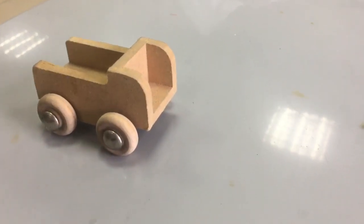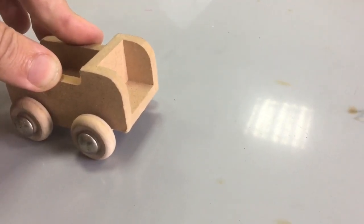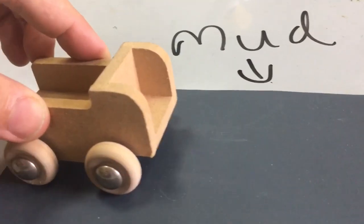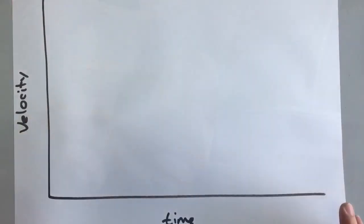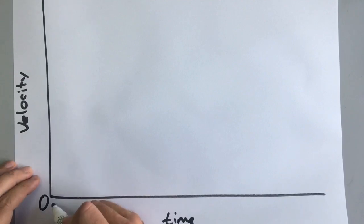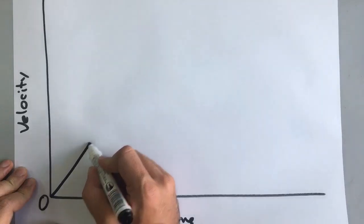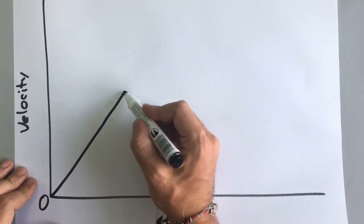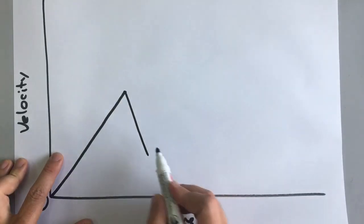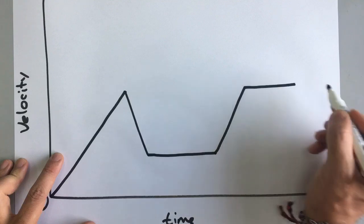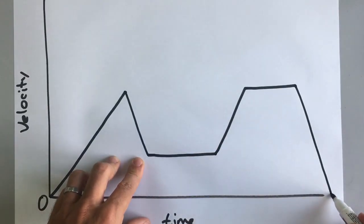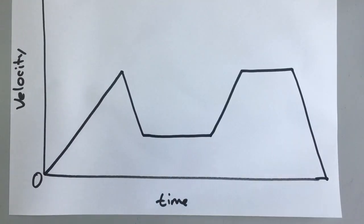Now we'll take our little car on a journey. He's stopped to begin with — his velocity is zero. Then he's going to accelerate until he gets to a patch of mud, and then he has to go very slowly through the mud. When he gets to the other side, he accelerates again, then reaches his destination and slows down to a stop. Drawing a graph of that journey: he starts with no speed, then accelerates, hits the mud and slows down, goes slowly through the mud, accelerates again on the other side, goes at a constant speed, then slows down and stops.